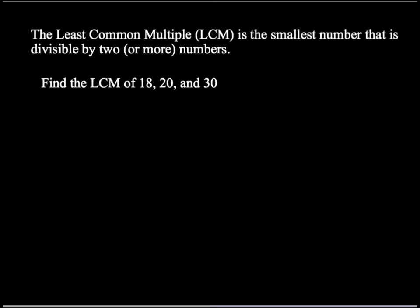So, what is the Least Common Multiple? It's the smallest number that is divisible by two or more numbers. For example, we could ask, what is the LCM of 18, 20, and 30?